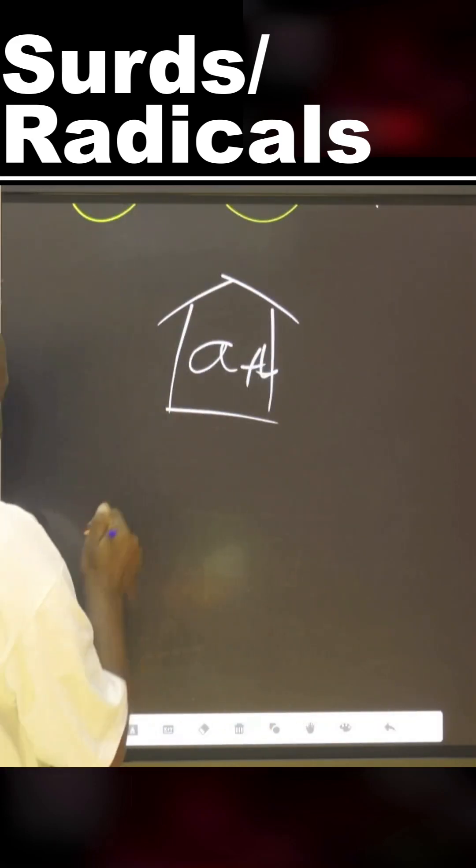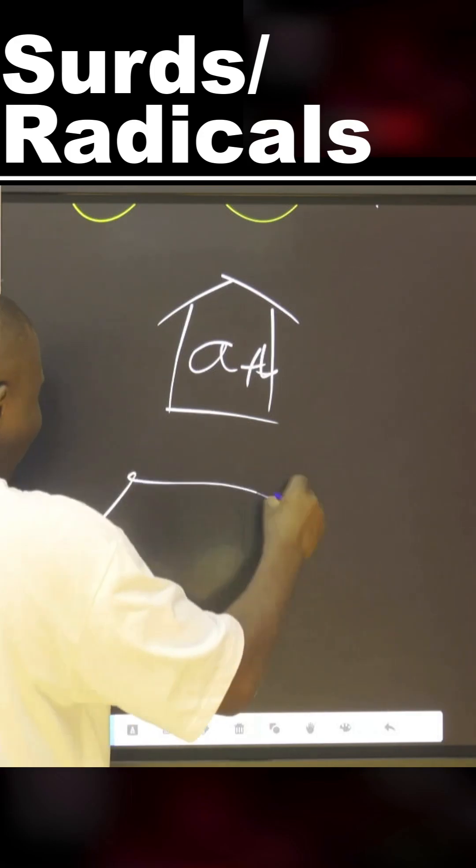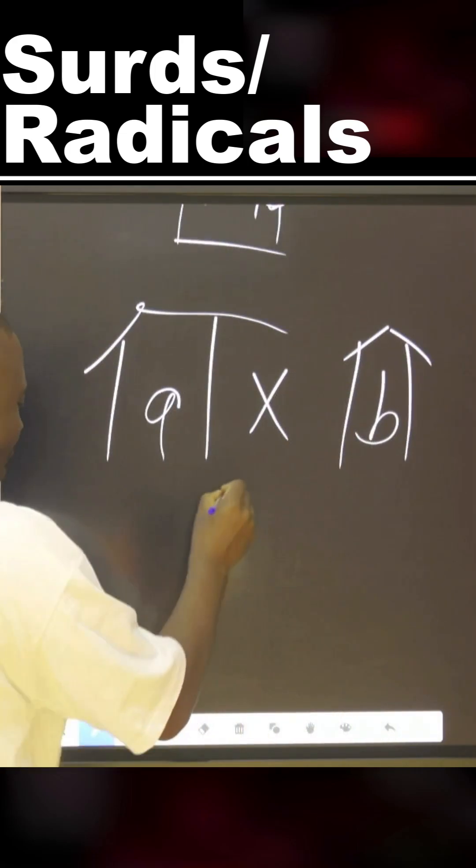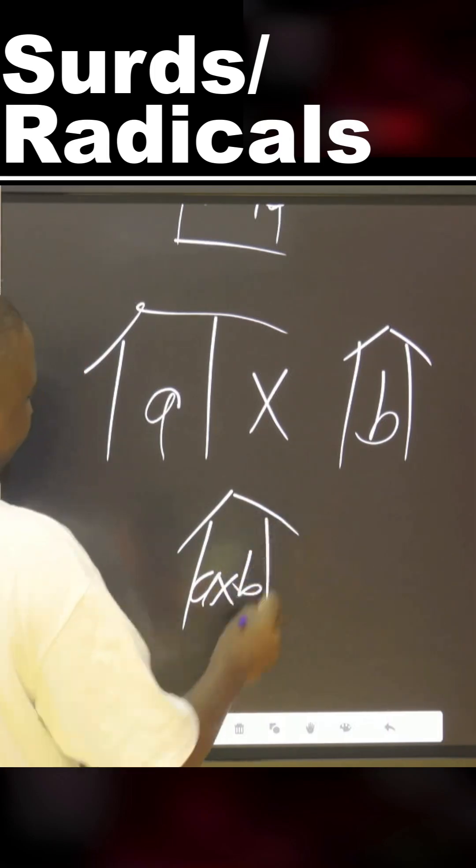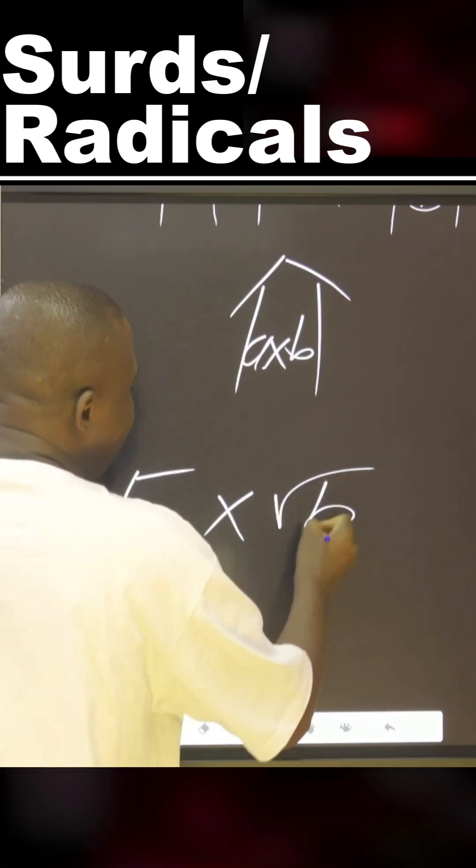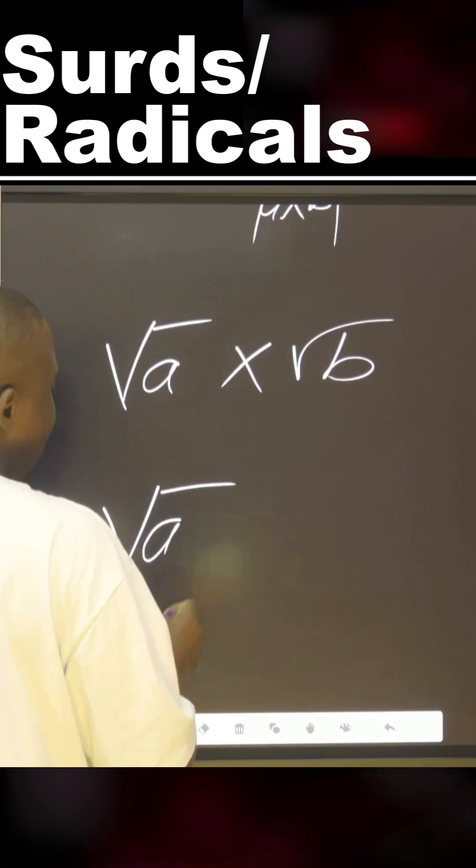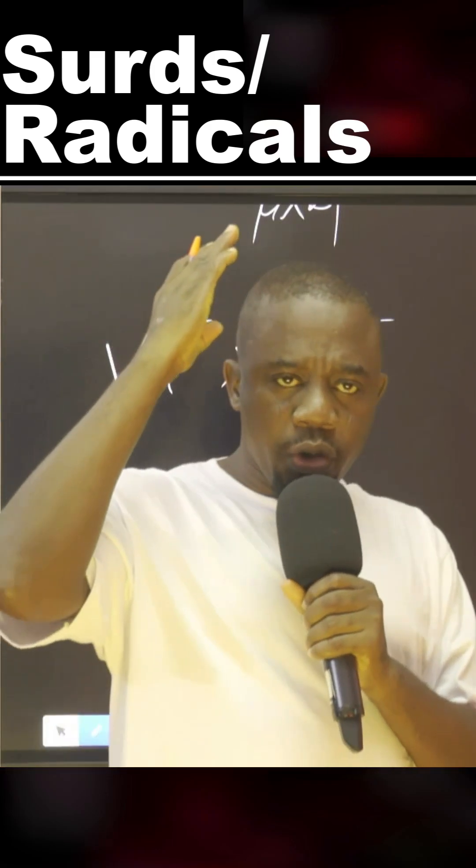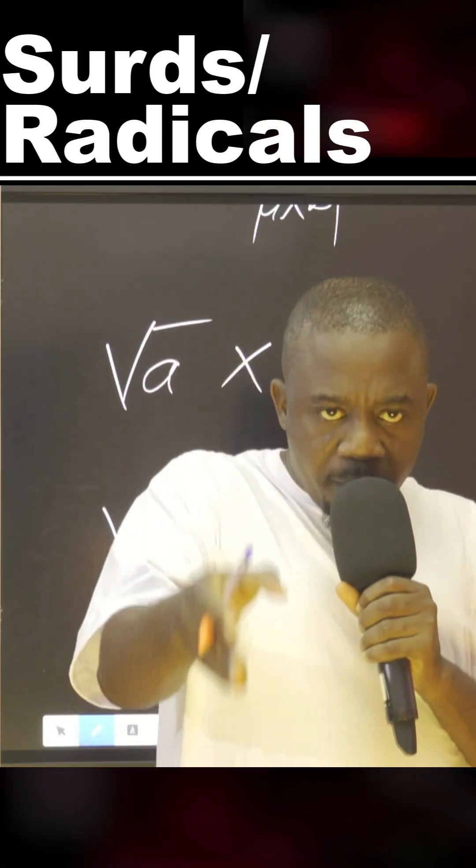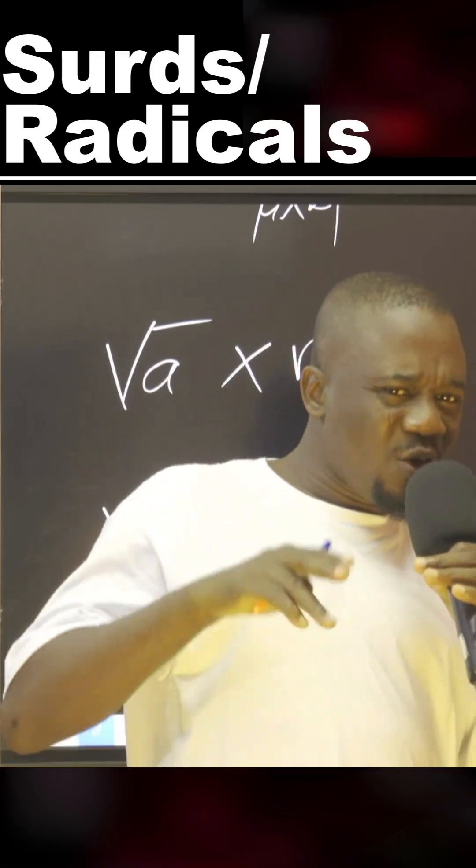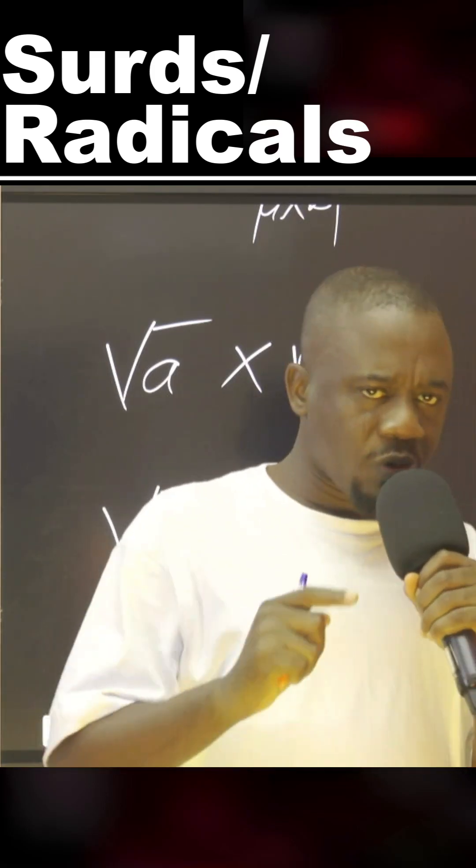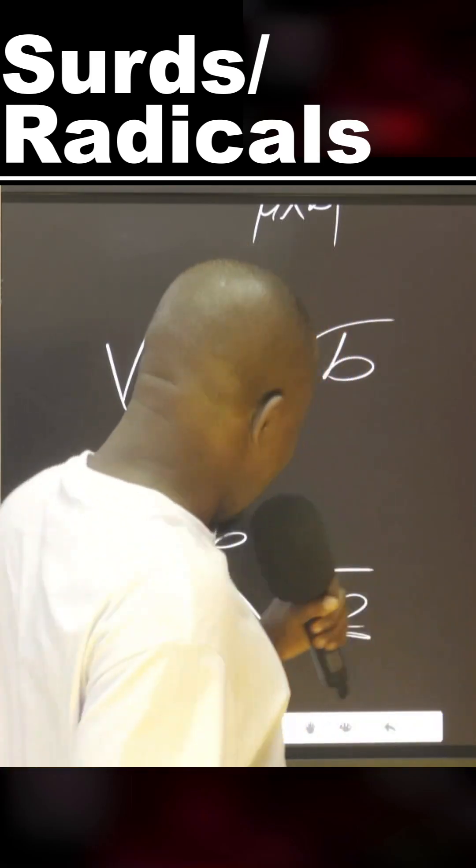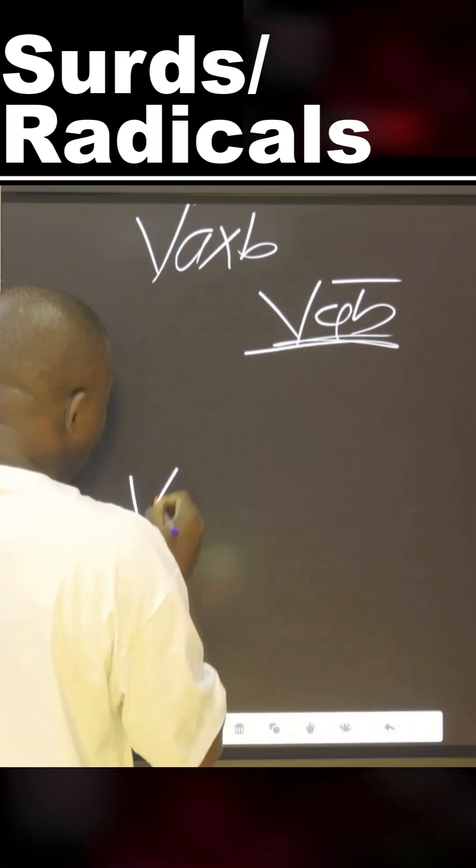I will tell you how to stay with them. To stay with them is if you have this house for A multiplied by another house for B. Then these two houses will accommodate both of them. That is to say the square root of A multiplied by the square root of B can be expressed as the square root of A multiplied by B or AB. But when it comes to subtraction and minus, they cannot live together.